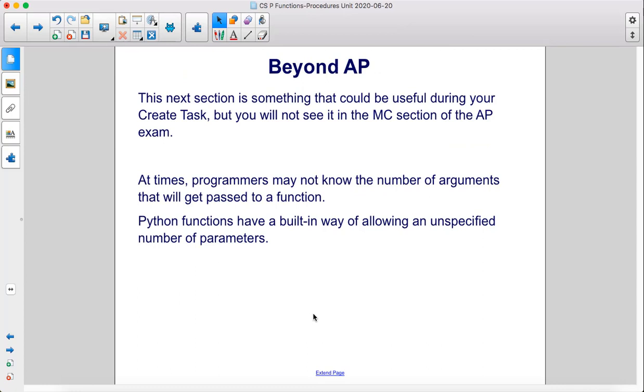This next section is something that could be useful during your create task but you will not see it in the multiple choice section of the AP exam. At times, programmers may not know the number of arguments that will get passed to a function. Python functions have a built-in way of allowing an unspecified number of parameters.